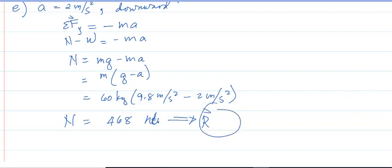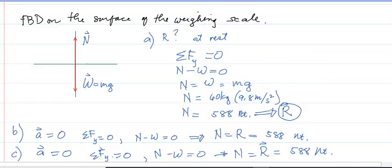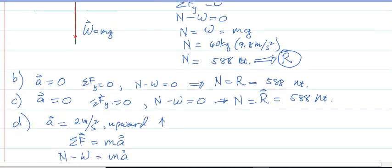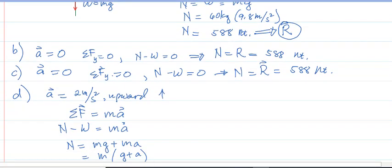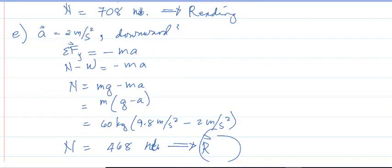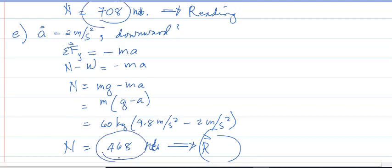What have you noticed? When there is no acceleration — whether at rest, moving upward with constant velocity, or moving downward with constant velocity — the reading on the scale is simply the weight of the man, equal to 588 Newtons. But when there is acceleration, there is an apparent increase or decrease in force. The man appears heavier or lighter; this is the concept of apparent weight, associated with inertia.